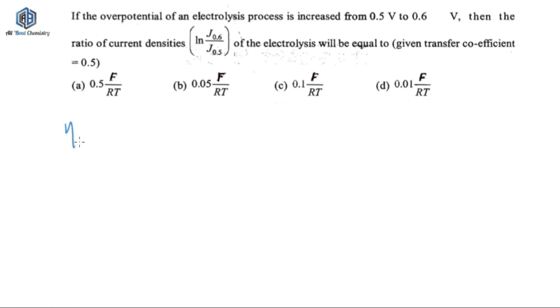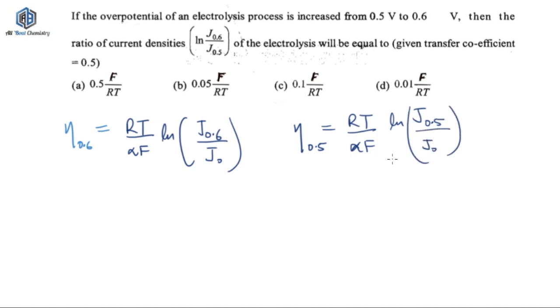So now you can easily say that your eta 0.6 will be given by RT upon alpha F ln J0.6 by J0. And similarly eta 0.5 will again be given by RT upon alpha F and ln J0.5 by J0. So this is how it will be given.